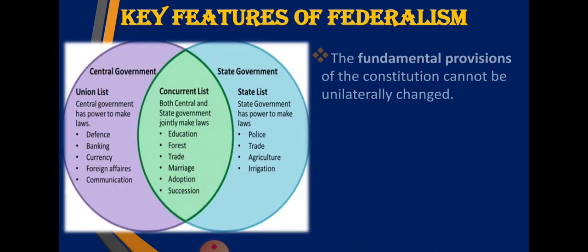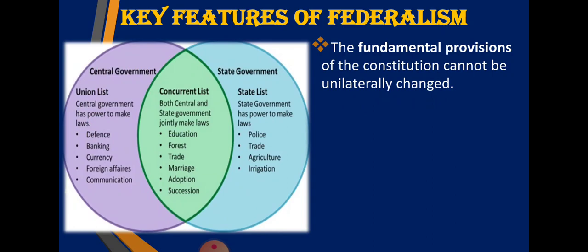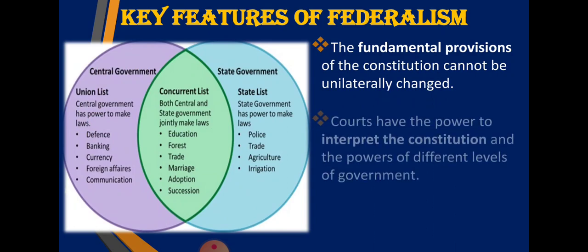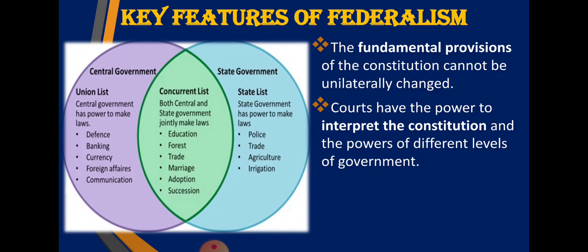The fourth feature of federalism is that the fundamental provisions of the constitution cannot be unilaterally changed. No single government can change them on its own - both governments must together reach a decision, and only when both agree can the basic structure of the constitution or fundamental provisions be changed. Fifth: courts have the power to interpret the constitution and the powers of different levels of government. Courts have the power to explain the basic principles of the constitution, its rules and regulations, and what powers the government has.